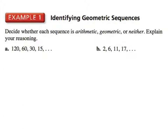Let's start with two easy examples. In example one, we determine whether each sequence is arithmetic, geometric, or neither. If we go from 120 to 60, 60 to 30, 30 to 15, we see that we are taking half each time. That means we are multiplying by one-half. Therefore, our common ratio is one-half, and this would be geometric.